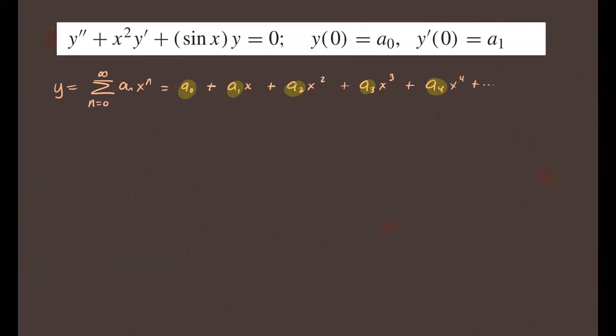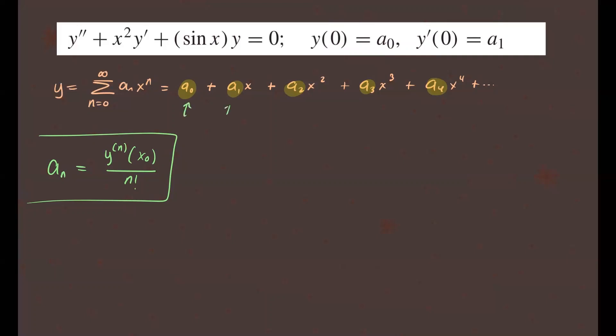This method is called successive differentiation. The idea comes from using Taylor's formula for finding coefficients. Recall that if you have a Taylor series expansion of a function, the coefficients are given by this formula: a_n equals the n-th derivative of the function evaluated at x₀, divided by n factorial. That's the formula from Taylor series to figure out coefficients.